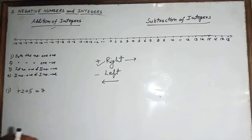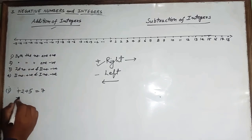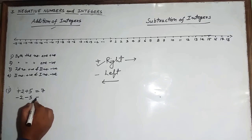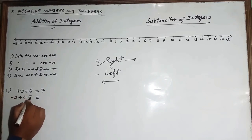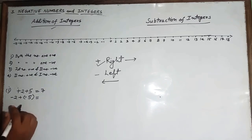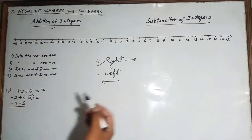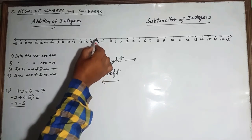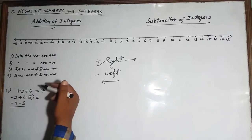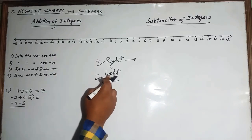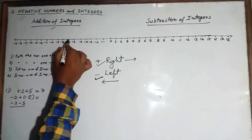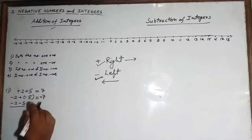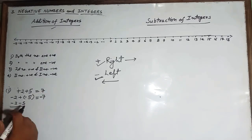For the second case, both numbers are negative, like minus 2 plus minus 5. We can write this as minus 2 minus 5. On the number line, minus 2 is here, and minus 5 means we move 5 steps to the left — 1, 2, 3, 4, 5 — so our answer is minus 7.